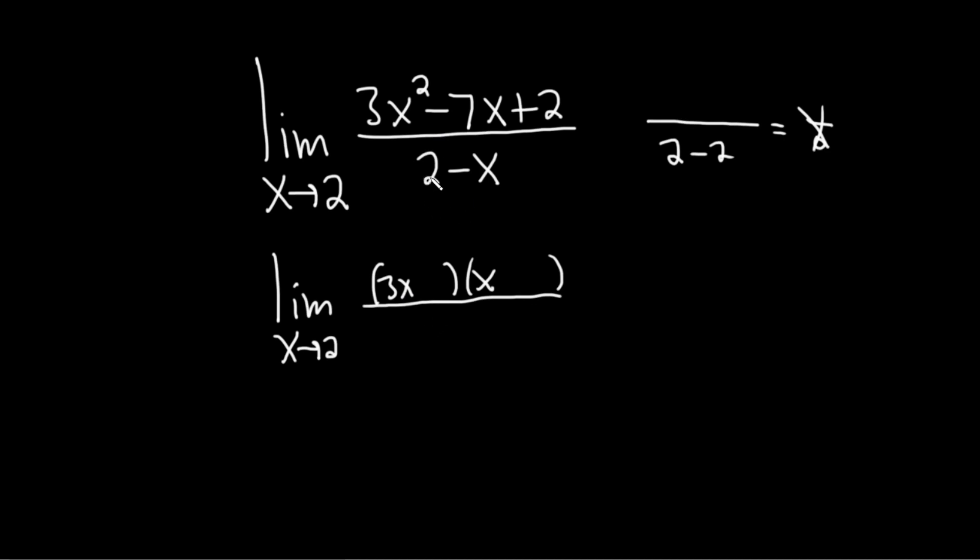So what we're going to do is factor out a negative 1 from the bottom. This is negative 1 times... what do you multiply by negative 1 in order to get negative x? X. And what do you multiply by negative 1 in order to get 2? Negative 2.